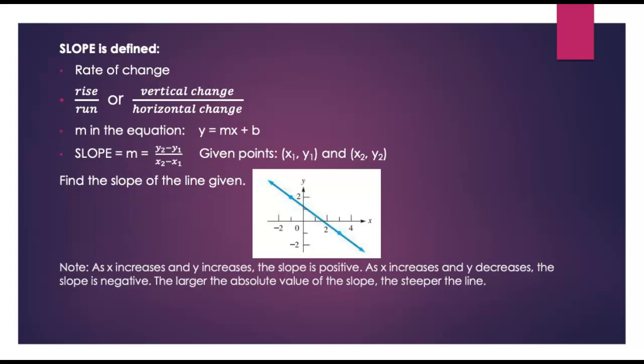One of the things that you should notice is that as x increases and y increases, the slope is positive. As x increases and y decreases, the slope is negative. And the steeper the line is is determined by the absolute value of the slope. So the larger that number is, the steeper the line is.